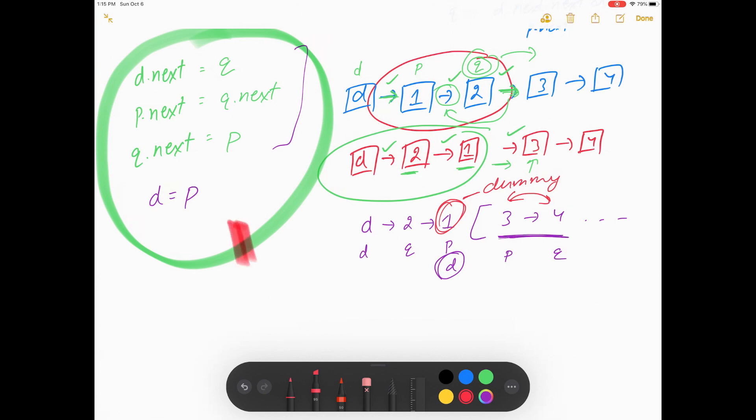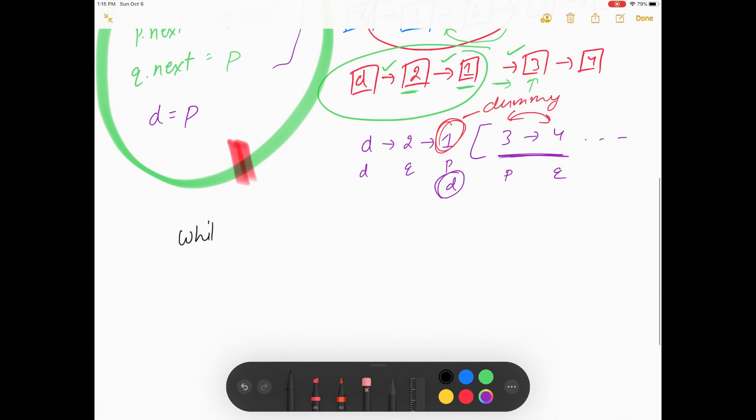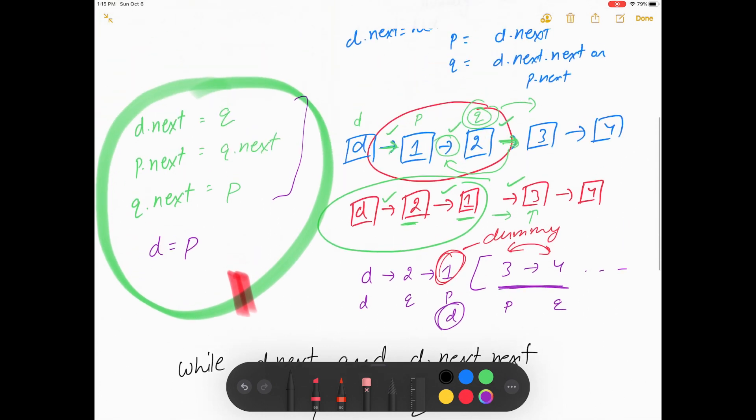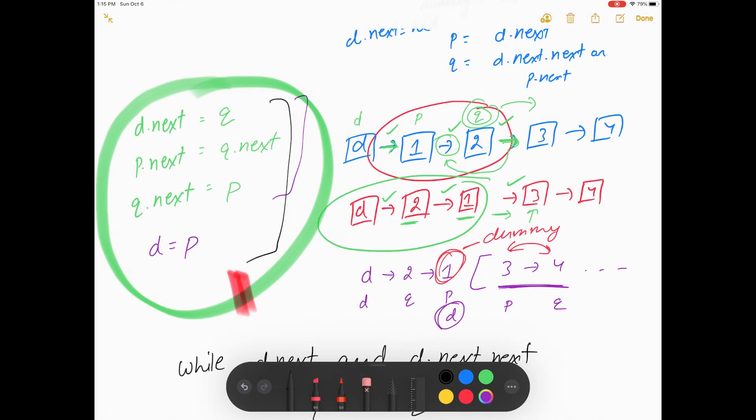Please try it by yourself and then come to the code. And let me tell you one more thing: till what time we will go now, do these things? While d.next and d.next.next is not none, or you can say till the time p and q are not none, we will gonna keep doing this four steps.